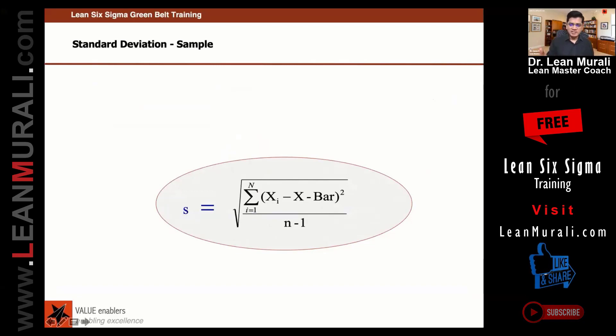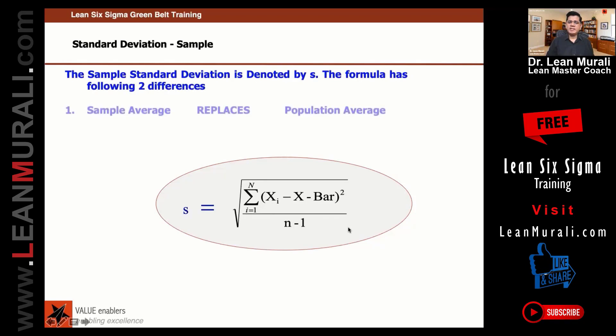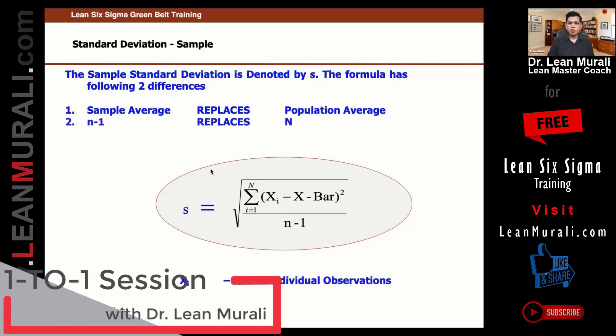If you're a mathematician you can understand this, otherwise don't worry about it. This bigger Σ is also called sigma, but that capital sigma is summation. Just remember this because computers will directly give these results, so don't worry. All I want to know is in sample we call it n-1, and in population we write it as n.